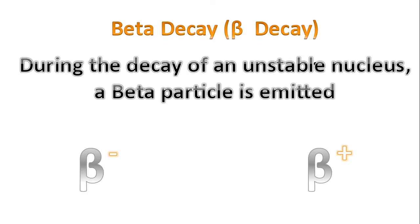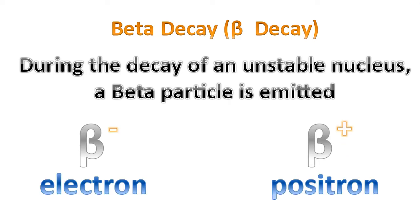Now let's focus on beta decay. During the decay of an unstable nucleus, a beta particle is emitted. There are two types of beta decay: beta minus and beta plus. For beta minus, an electron is emitted or ejected. And for a beta plus decay, a positron is ejected or emitted.